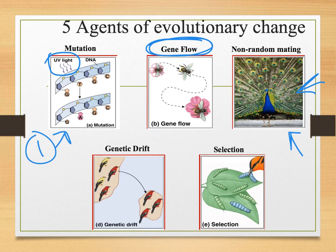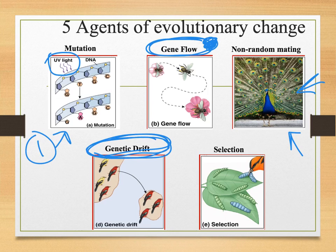Another agent is genetic drift, where you have a bunch of genes moving that then changes populations. Gene flow is kind of where you have just genes in general moving, whereas genetic drift is where you have a bunch of genes moving together that then changes populations.